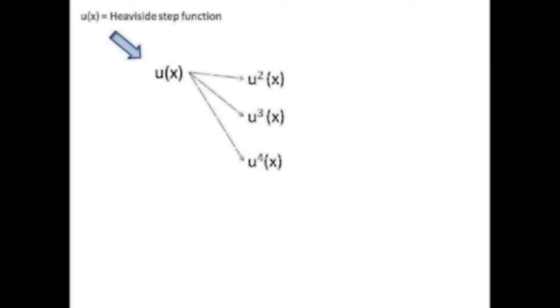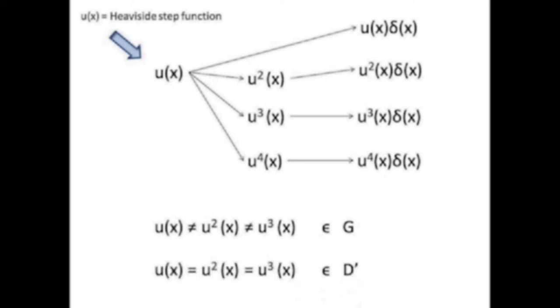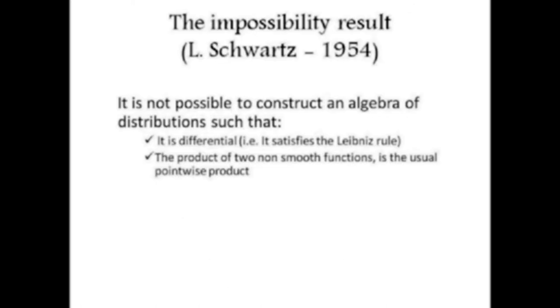The problem with Colombeau algebras is infinite branching: if we keep multiplying distributions, we get elements in G which are all different from each other, apart from those that are exactly the same up to permutation of terms since multiplication is commutative. For example, the step function is different from its square or cube in G, while they are the same function in D-prime, the space of tempered distributions. This is due to the impossibility result.